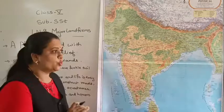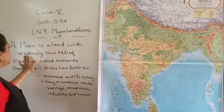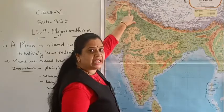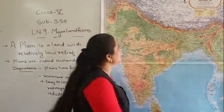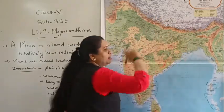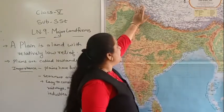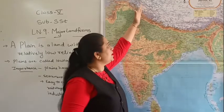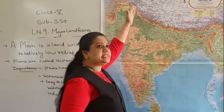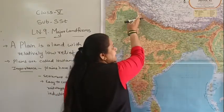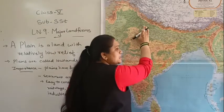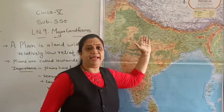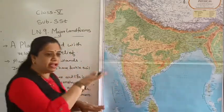Now let us move towards the plains. What is a plain? A plain is a land with relatively low relief. In the northern part of India, from Jammu Kashmir in the north to Arunachal Pradesh in the east, we have mountain ranges. We have the Himalayas, and when the snow on the Himalayas melts, rivers flow through the mountain valleys. When these Himalayan rivers flow and enter the plains, they form the northern plains.